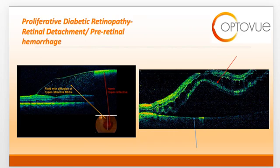Neovascularization can also lead to tractional retinal detachments, resulting in a separation of the neurosensory retina from the underlying RPE. The red arrow on the slide to the right is pointing to the neurosensory retina. The blue arrow is pointing to the RPE. You can see that there is a complete separation from the neurosensory retina to the underlying RPE. In this particular case, the macula is involved, so we would call this a macula-off retinal detachment.